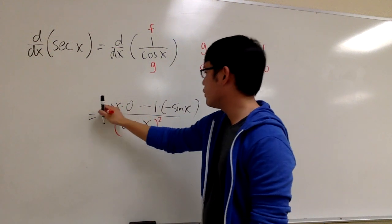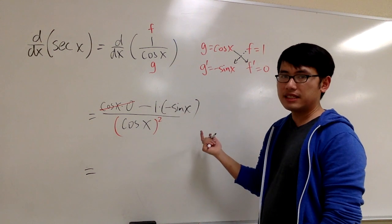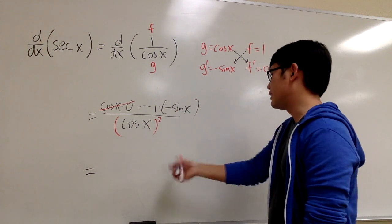Cosine x times 0, of course that would be 0. And negative times negative is positive. So we have a positive at the end.